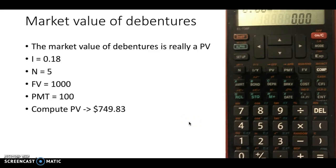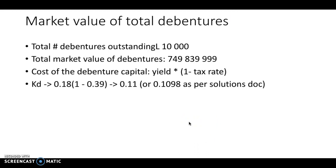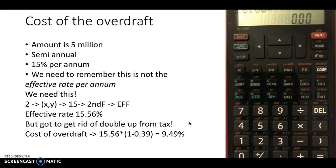So that gives us the market value of debentures. The total number of debentures outstanding was 10,000, so the total market value of those debentures is about $7.50 million, give or take. The cost of debenture capital is the yield times one minus the tax rate, or 0.18 times one minus 0.39, or 0.1098.